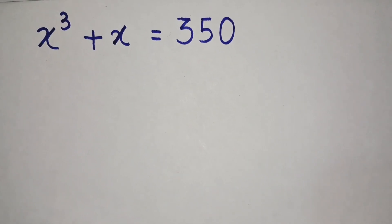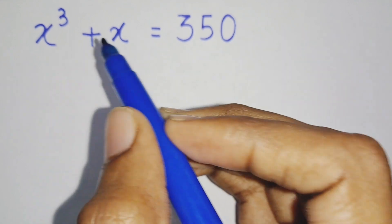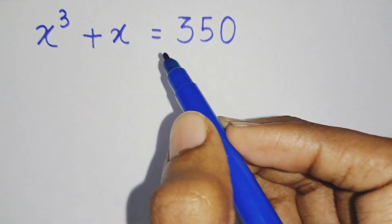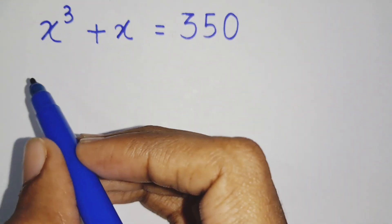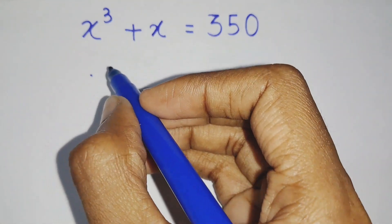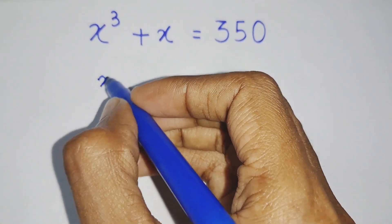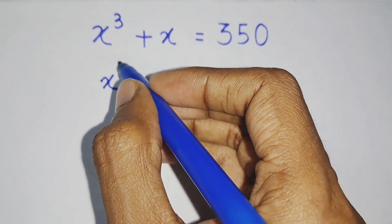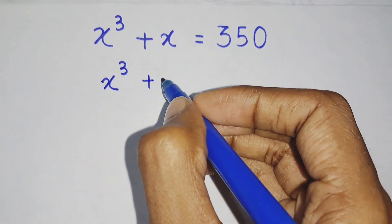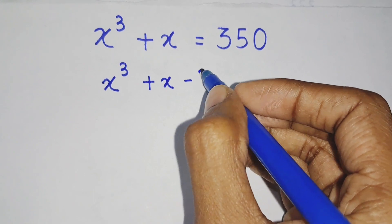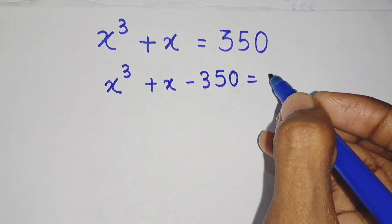Hello everyone. Today we are going to solve a cubic equation, which is x cubed plus x equals to 350. We can solve it very easily. We will first take the right hand side to the left hand side, that is x cubed plus x minus 350 equals to 0.